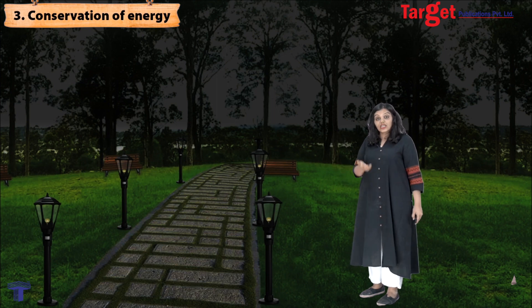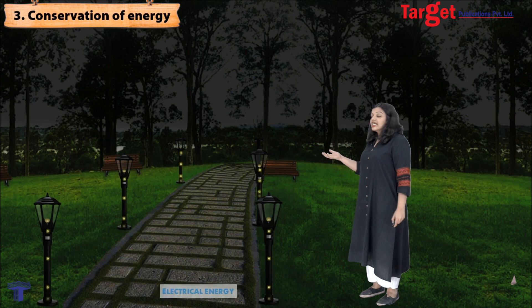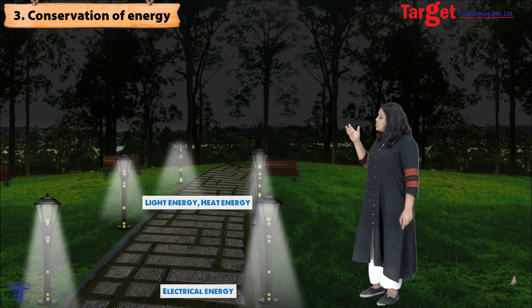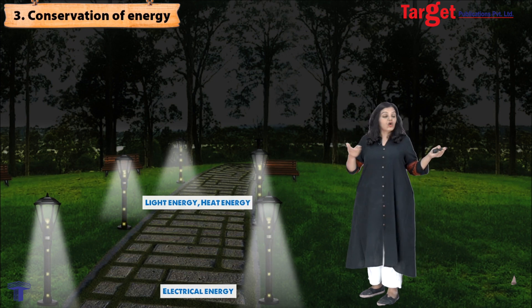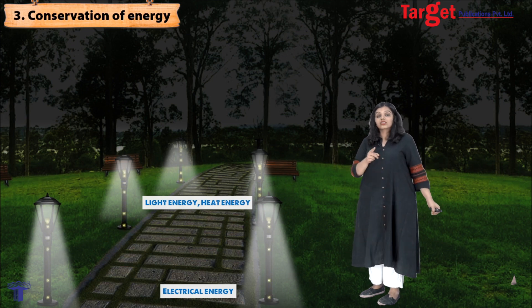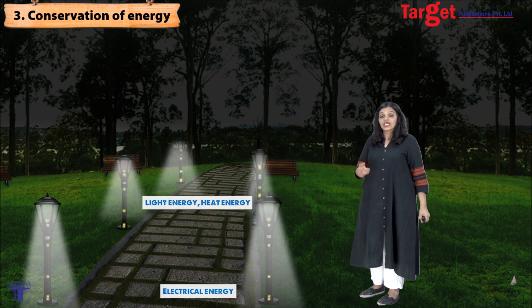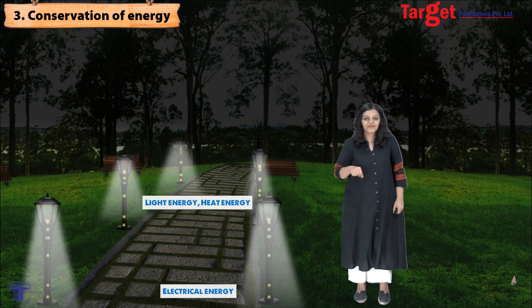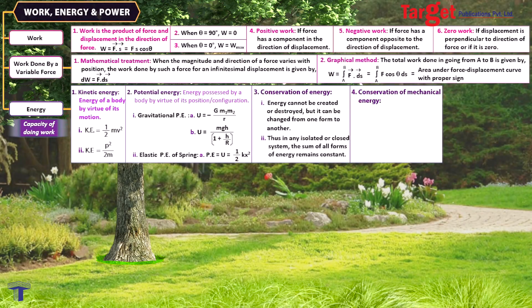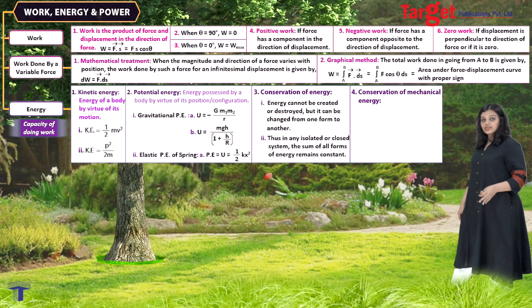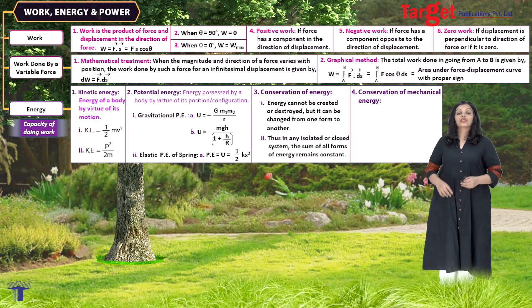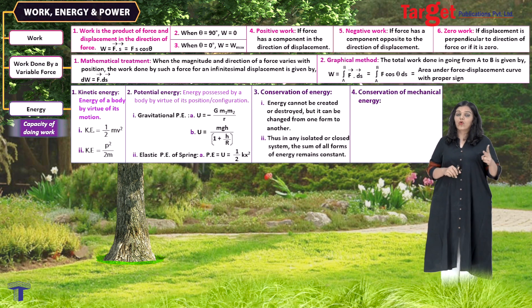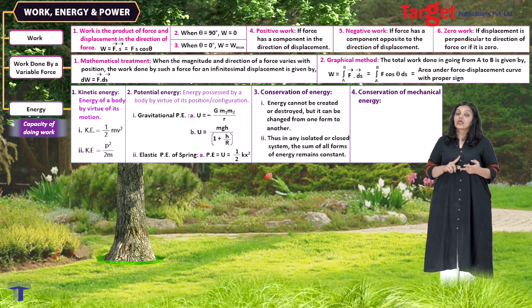Just like the conservation of total energy, we also have the law of conservation of mechanical energy. Mechanical energy has two components: potential energy and kinetic energy. The law of conservation of mechanical energy says that the total mechanical energy of an isolated system also remains constant. I can also say this a different way: the change in kinetic energy is always equal to the work done. The only reason there will be a loss or gain in the kinetic energy of a system is if there is work done.